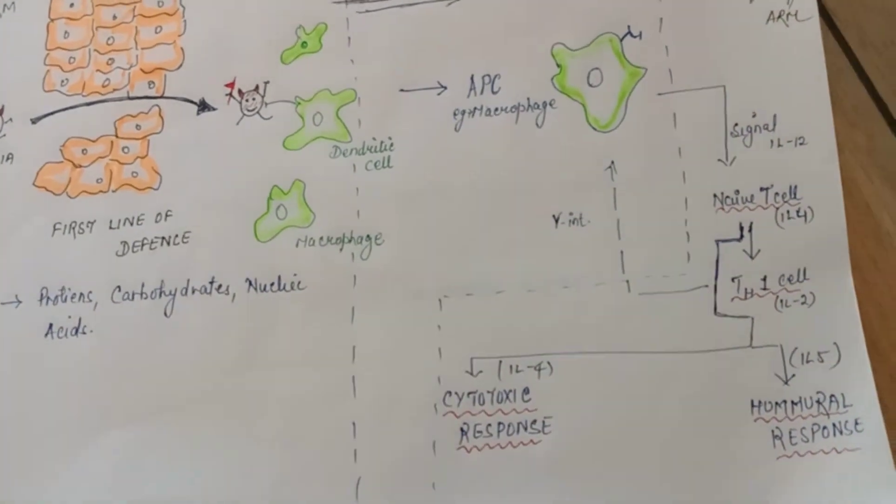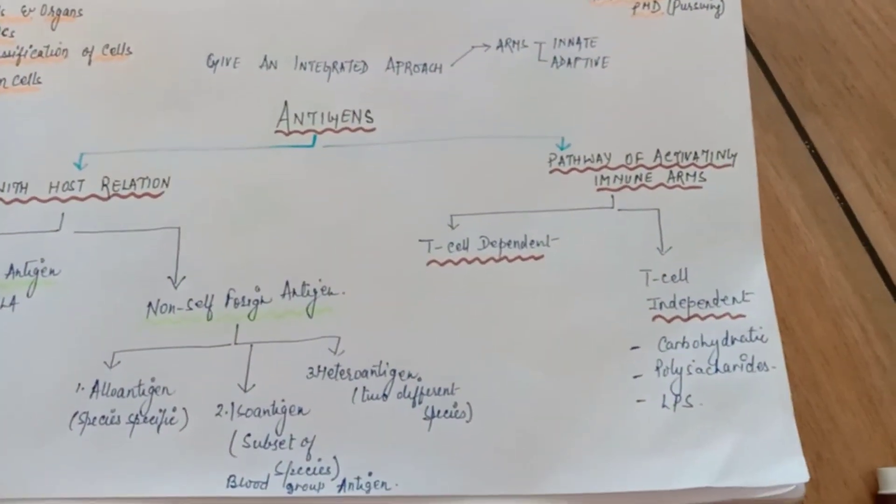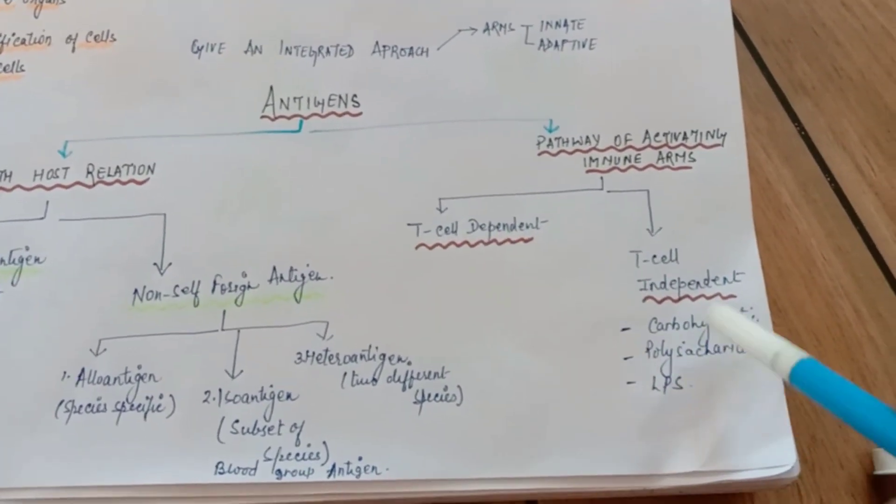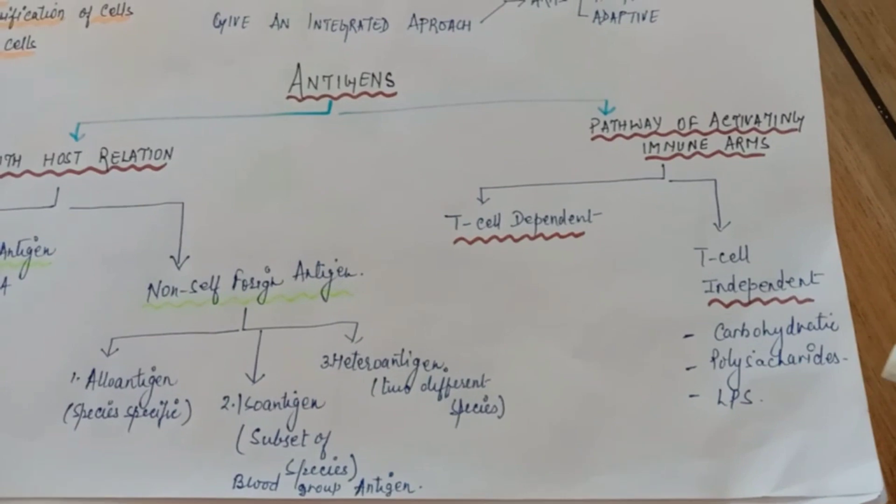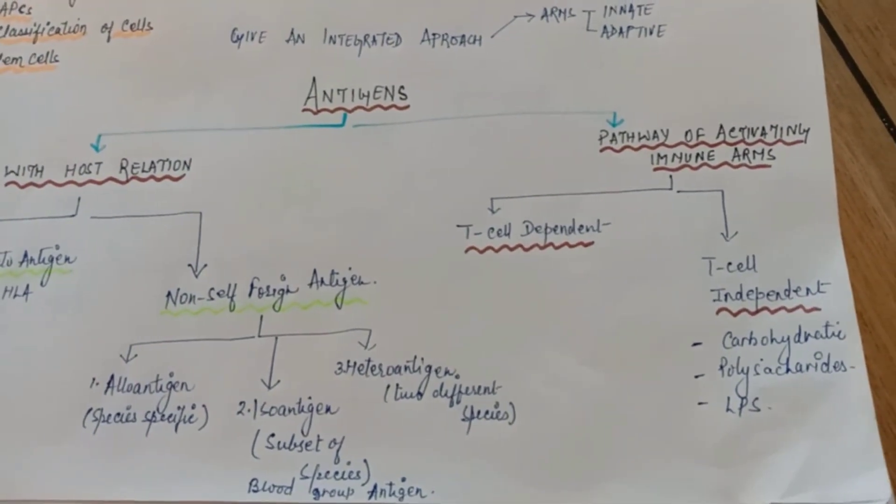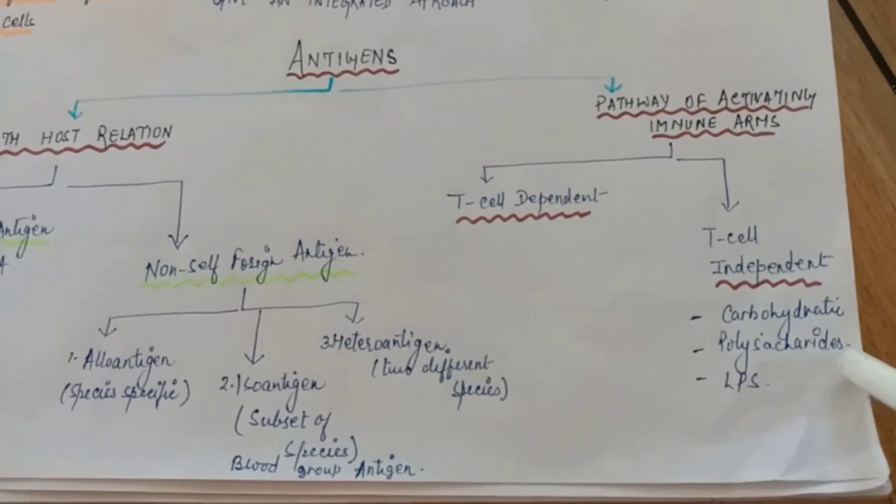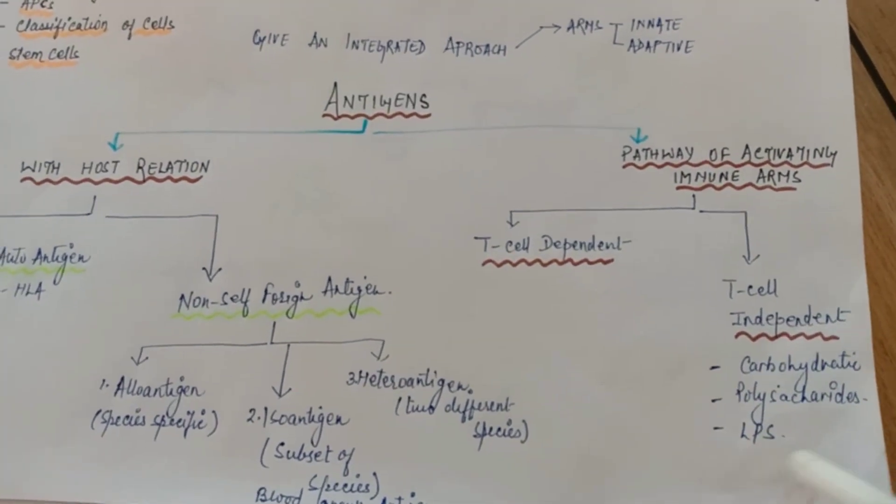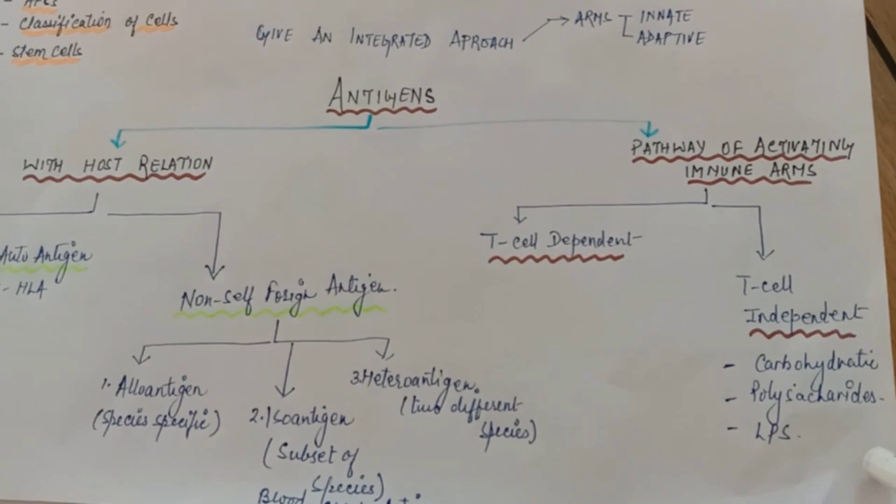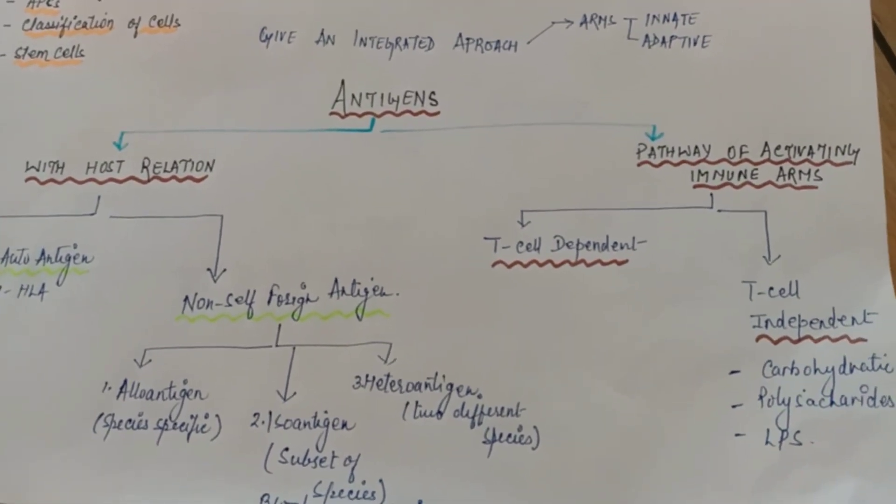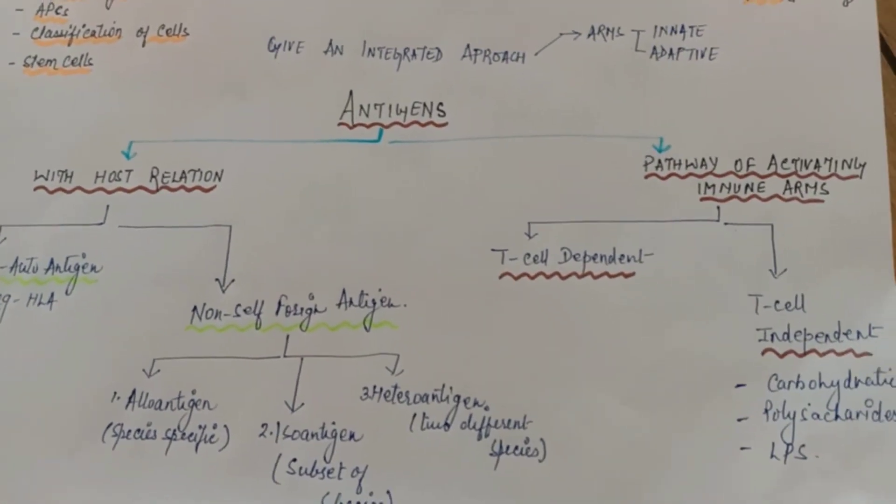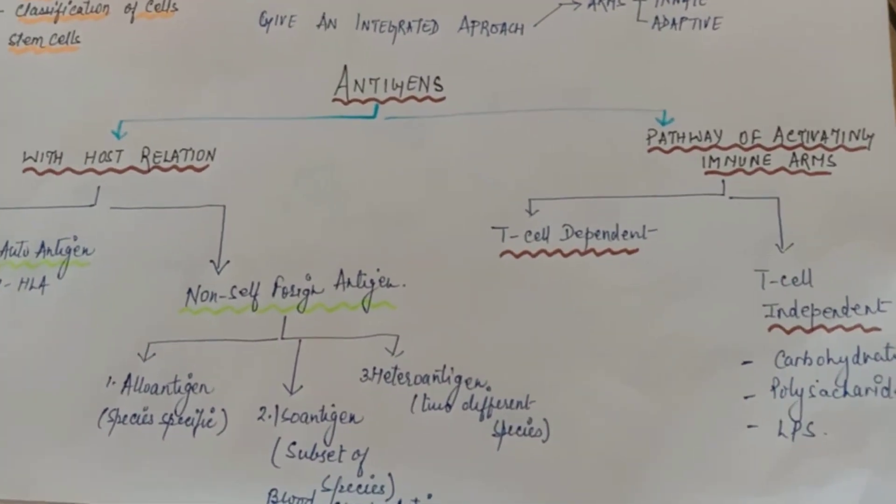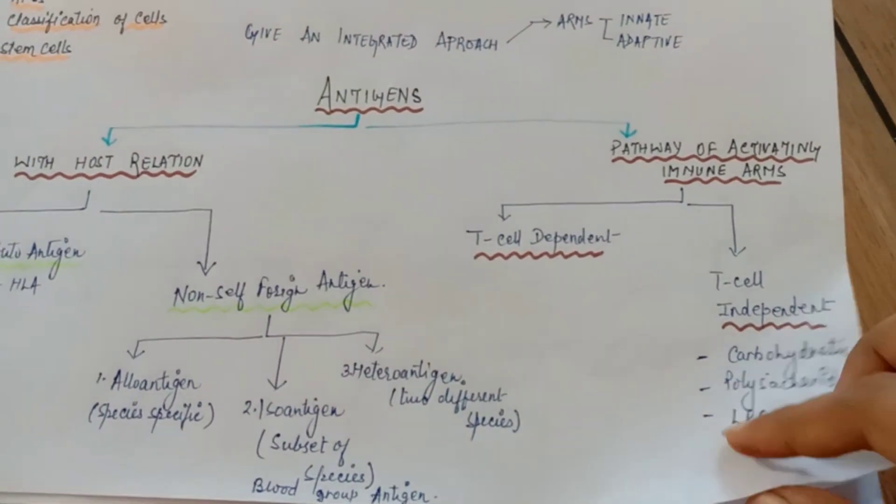I have classified, we have carbohydrate, polysaccharide, and LPS. Anything which is having multiple factors like polysaccharides, sugar-containing things, LPS, lipopolysaccharides from gram-negative bacteria mostly, they can directly activate humoral response or directly activate B cell. That's why it is T cell-independent response.